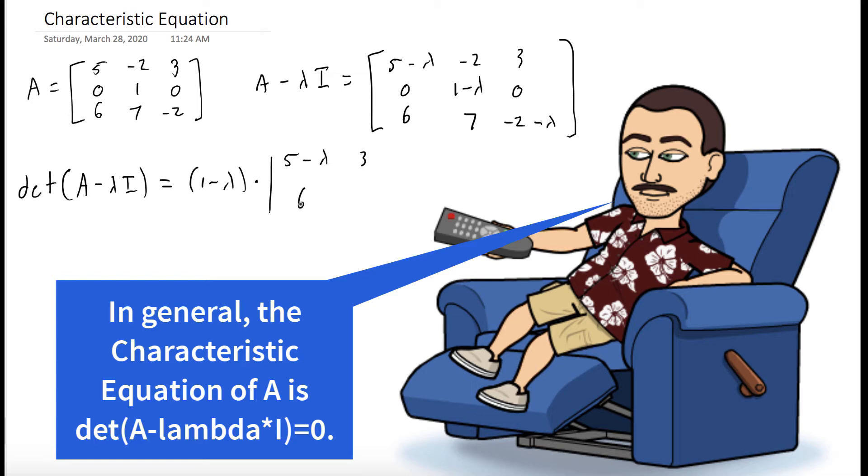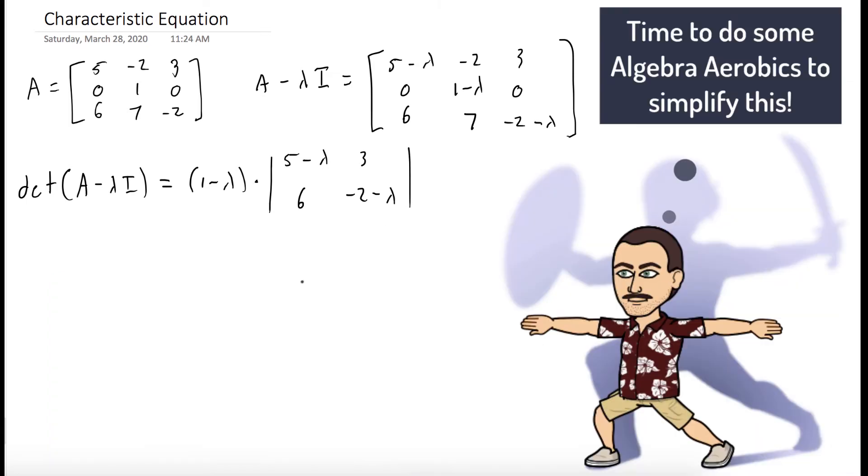So this works out to be 1 minus lambda times the determinant of this 2 by 2 matrix. We have a nice and easy method of finding the determinant of a 2 by 2 matrix. We multiply down the main diagonal and subtract off the product of the other diagonal.